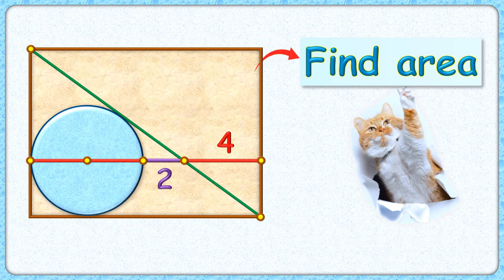Wow, this looks interesting. The question given to us is a rectangle with a diagonal drawn. In one part of this triangle, a circle is drawn and a horizontal line is drawn which is passing through the center of the circle. Given is this purple and red line segment length is 2 and 4 centimeters.